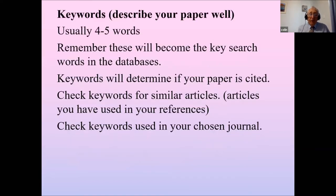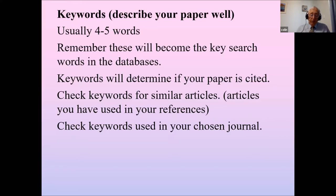We use four or five keywords associated with the topic of your paper. These become the key search words in different databases, so keywords will determine if your paper is cited. Find keywords from similar articles in the literature and look for keywords published in the journal you have chosen, because that indicates your paper will fit with that journal.